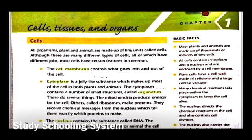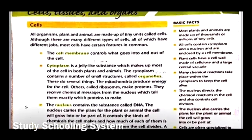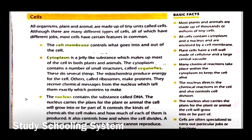Today we're going to study cells, tissues, and organs. I want you kids to make a title page first. Write the title 'Cells, Tissues, and Organs' and you can draw a cell and add today's date. Now I'm going to read this whole paragraph and then explain it. As you can see, there are some basic facts — interesting stuff that will make everything easier for you.